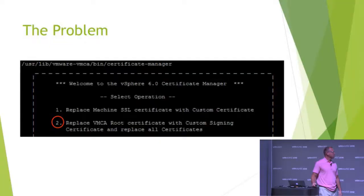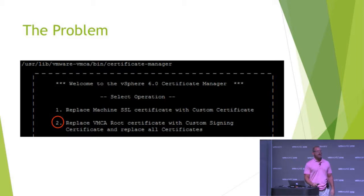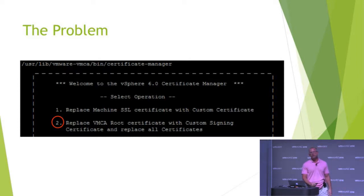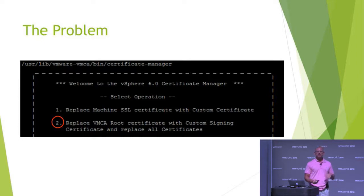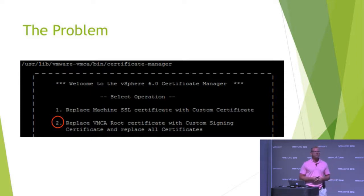So you go through the process, select number two there on the VMCA and the PSC to replace the certs. You go through the process and you have to log in with the admin at vSphere local account. And then you're presented with all the config file information parameters. You have about six of those — five solution users and the machine SSL user. You get that done, submit your CSR that's generated to your CA, get your cert back, do the import, and go through the process. Everything's looking good. You see from the output there that everything is replaced successfully. The services are stopped and then they're starting up.